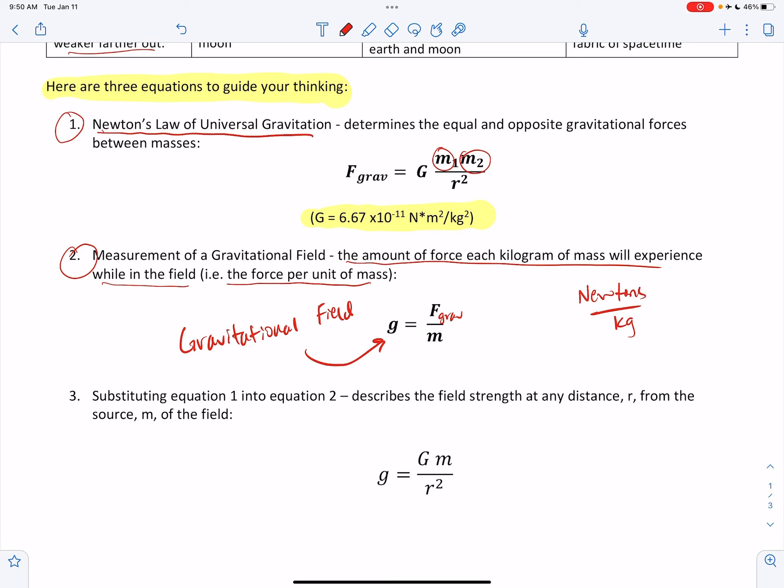And we know that on Earth, the gravitational field strength is exactly 9.81 newtons per kilogram, meaning on the surface of Earth, 9.81 newtons per kilogram. And that is based on the mass of the Earth and the radius of the Earth.